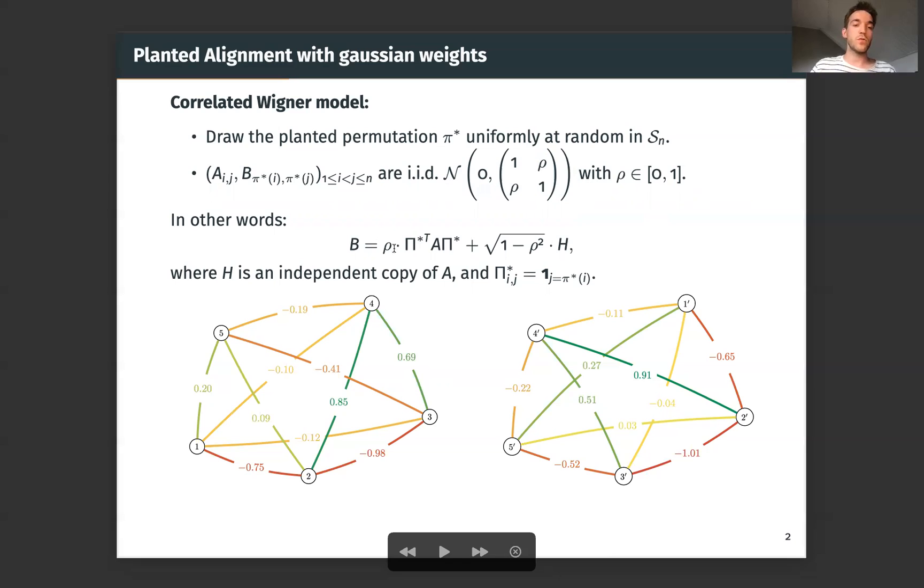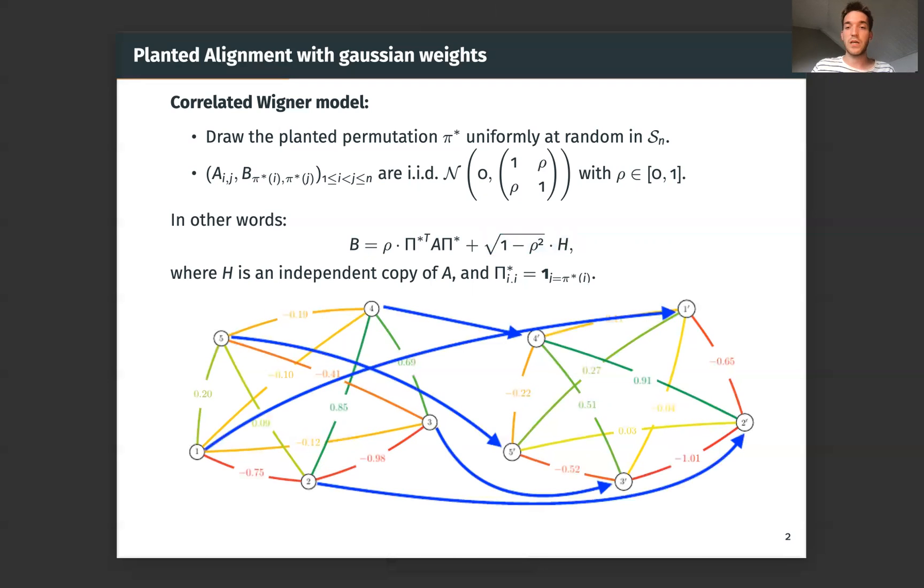We can also write this as B equals ρ times a permutated version of A plus some additional random noise. So you see here an example of our model. So the graphs are complete and their edge weights are correlated and we want to find exactly our permutation back. So the goal is to recover all π*.